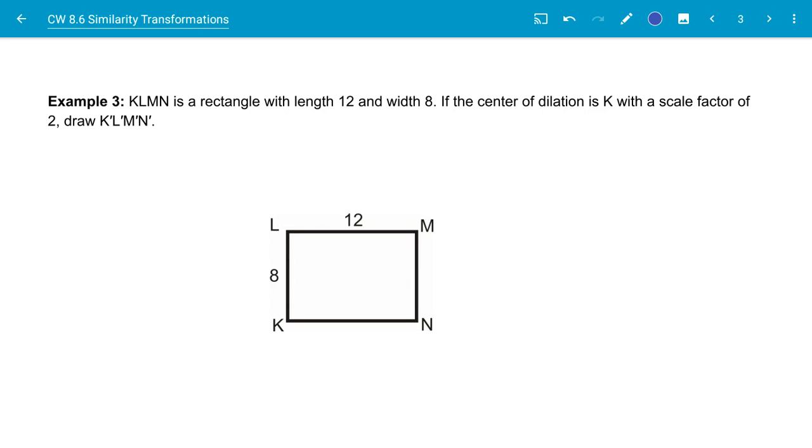In example three, it says KLMN is a rectangle with a length of 12 and a width of 8. If the center of dilation is K with a scale factor of 2,